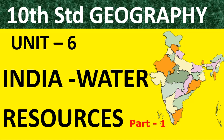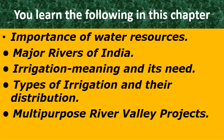Now let us go to India Water Resources. In this chapter, you learn the following: the importance of water resources, major rivers of India, irrigation — its meaning and need of irrigation in India — types of irrigation, underdistribution, and multi-purpose river valley projects. Dear students, keep this in mind. You may have one location in the map for the annual examination and even 2 or 3 marks of question in this chapter, so be ready to learn this.